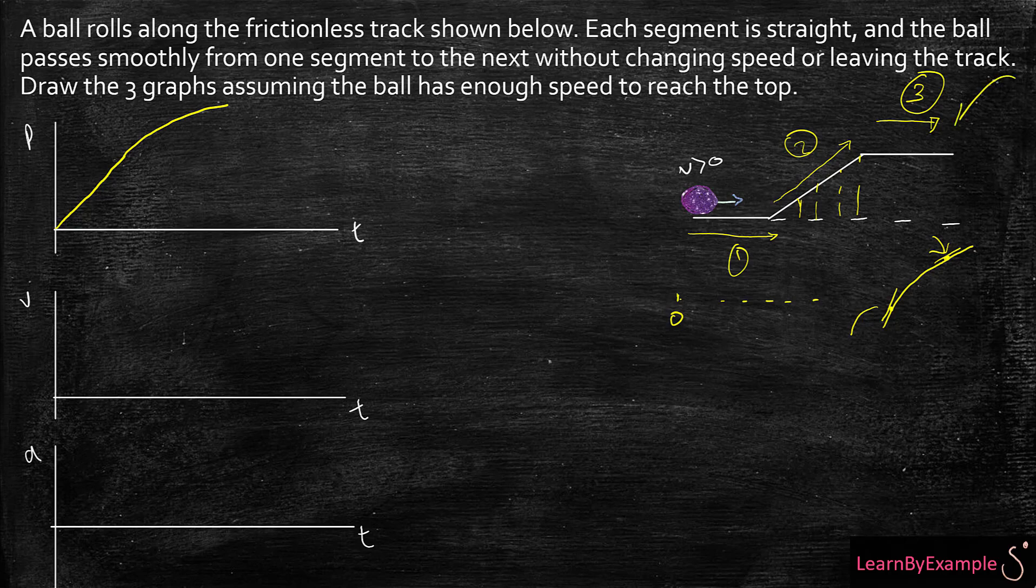Now for the third part, I'm going to have my ball continuing at a constant velocity. So whatever the velocity that we're going to end up here, it's going to keep that and move forward because there's no friction, it's not going to slow down. The question mentions that there is no friction involved.